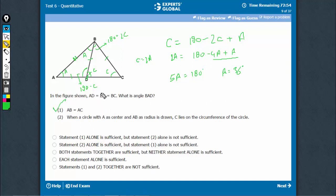Coming to statement 2, let's draw it again. Coming to this one, when a circle with center A is drawn, the question says AD is equal to DB is equal to BC. And when a circle with A as center and AB as radius is drawn, C lies on circumference of the circle.